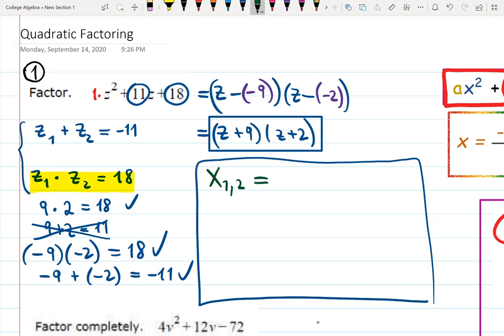And then usually I'm writing it down. It's going to be x1 and 2, that's how I do it, two roots. Sometimes they're the same.